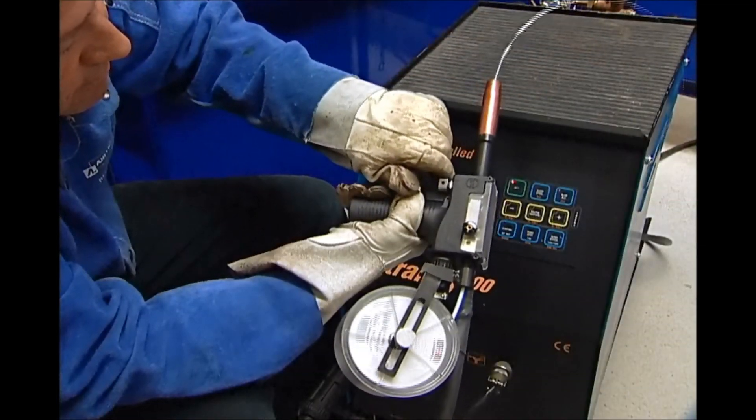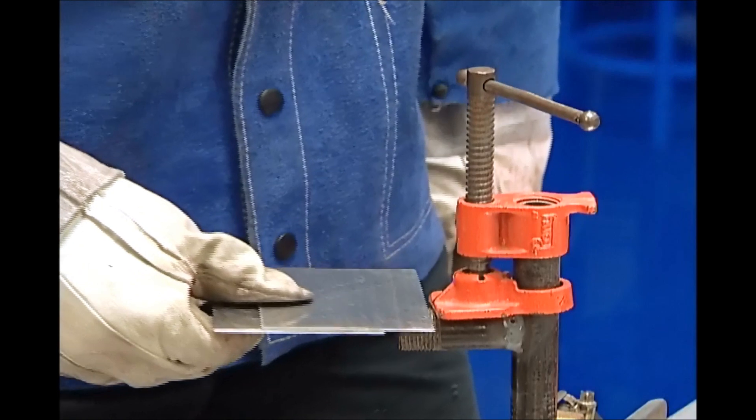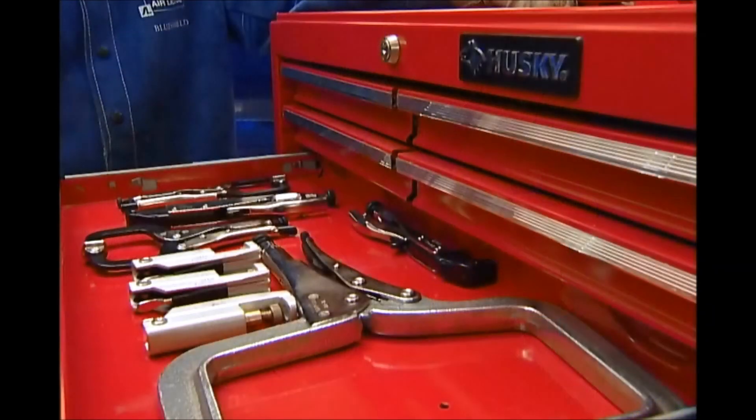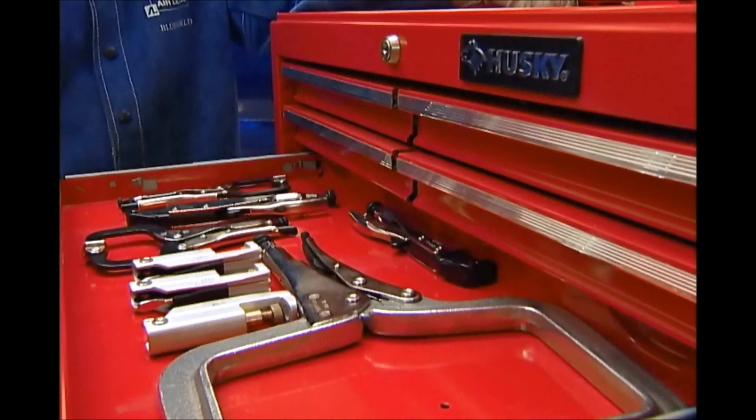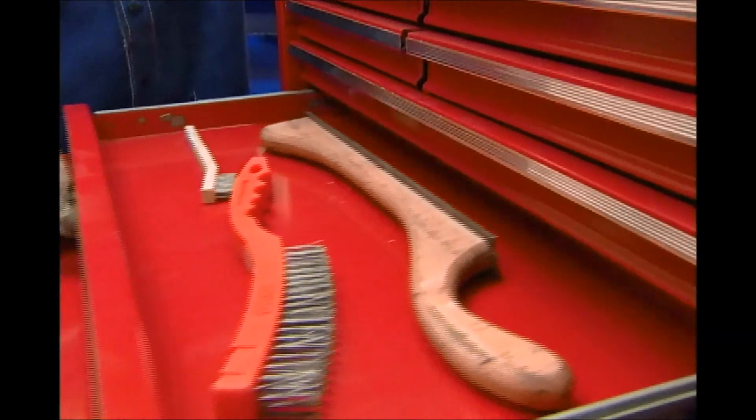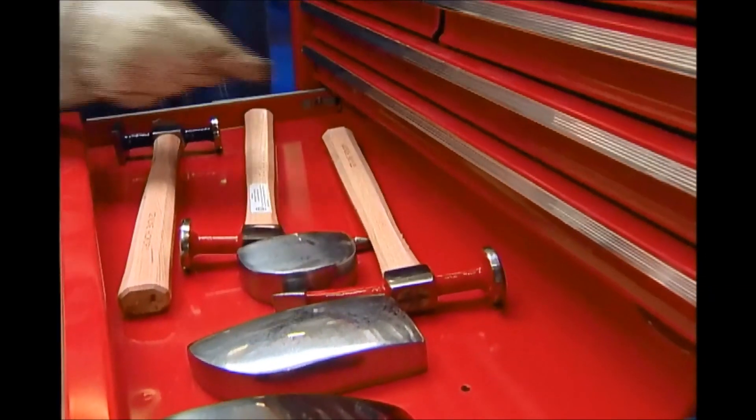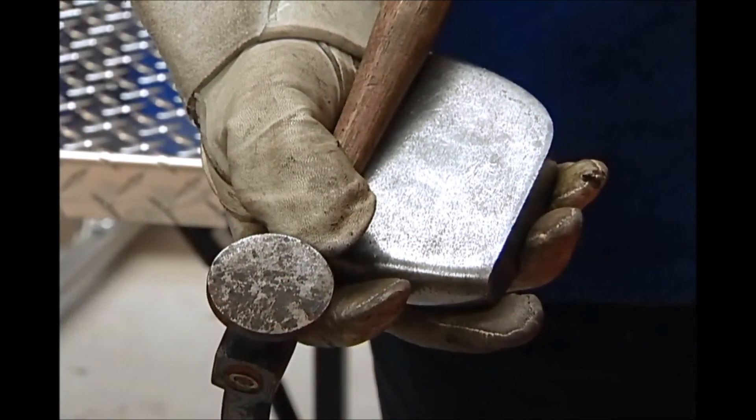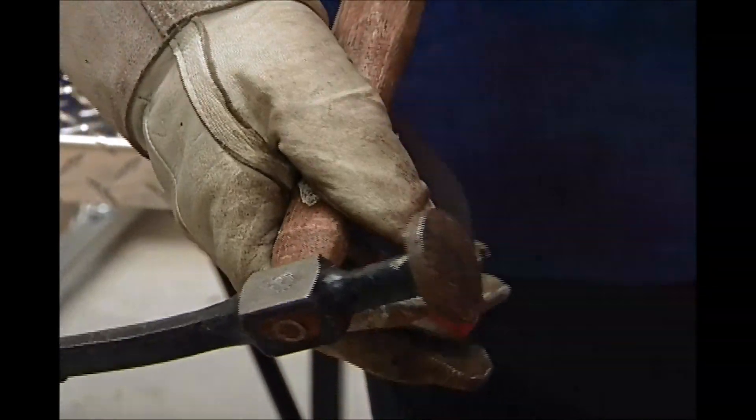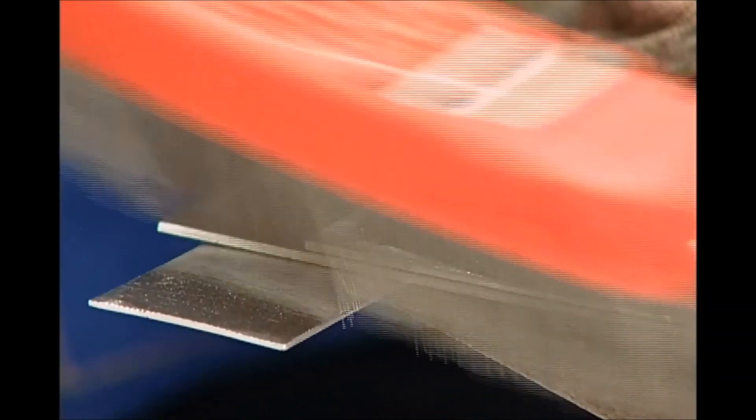Now we're ready to weld, but first we need to prepare the aluminum to make it clean and free of contaminants. It's important that all tools used to work on and prep aluminum be kept separate from tools used on other metals. This eliminates the risk of contamination from any residue that could be left on non-dedicated tools.